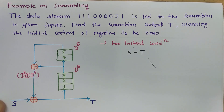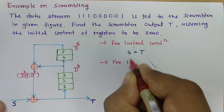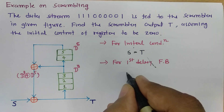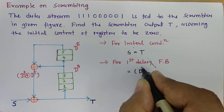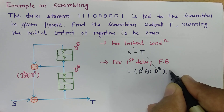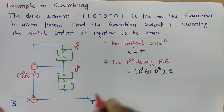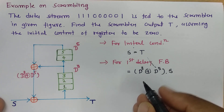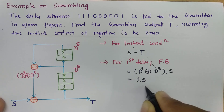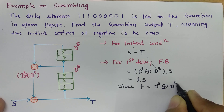So this is the feedback which is coming. For the first delay, you will be finding that the feedback will be d³ mod-2 sum d⁵. And here we have s as an input stream, so I need to multiply that with s. So for the first delay, feedback will be this. Now let us consider d³ plus d⁵ as a function f, so it will be f into s, where f equals d³ plus d⁵.